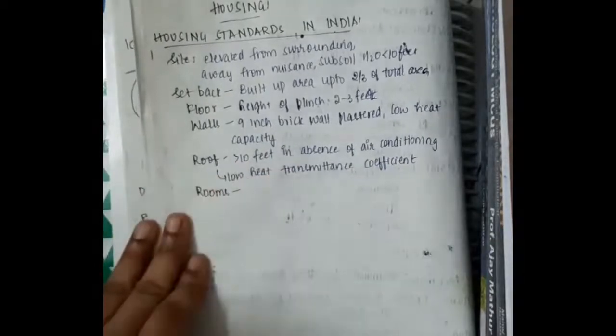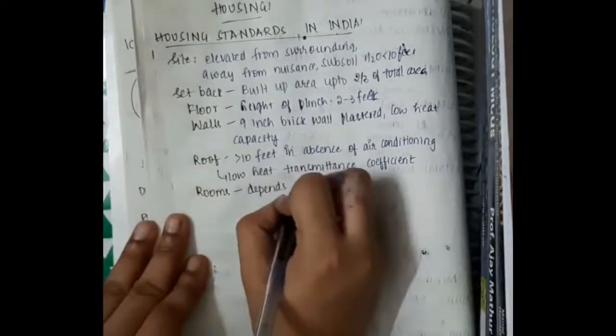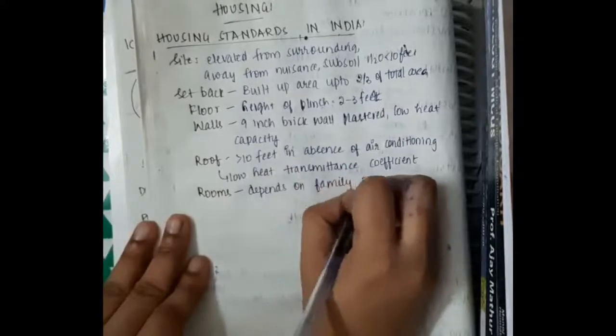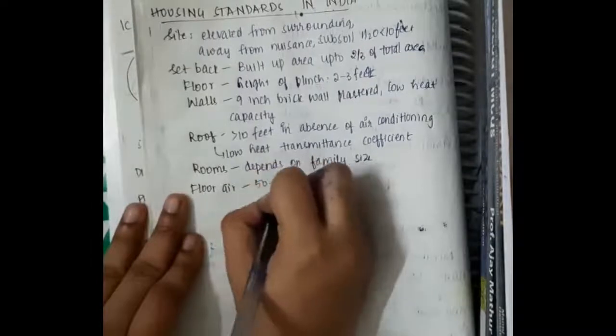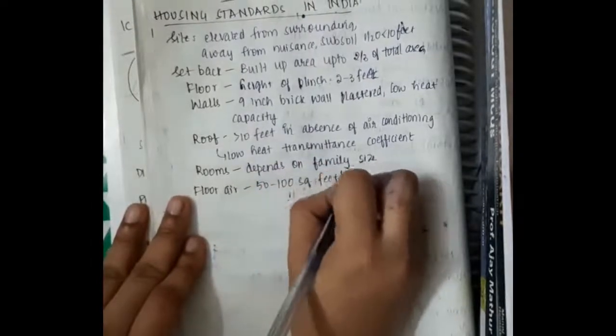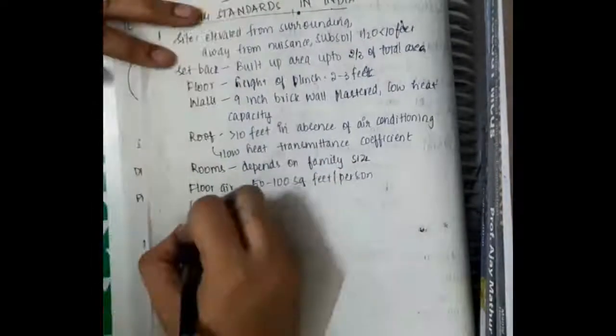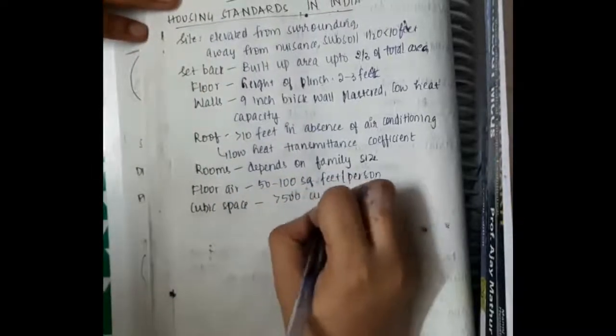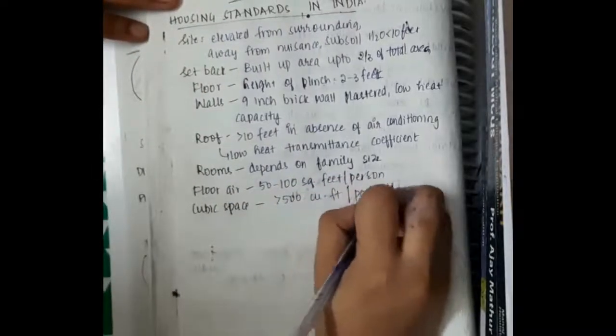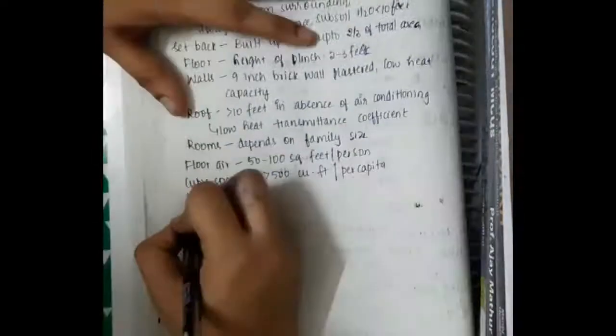Then all the rooms depend upon the family size. And floor area includes mainly 50 to 100 square feet per person. Floor area includes more than 50 to 100 square feet. And cubic feet space should be more than 500 cubic feet per capita.